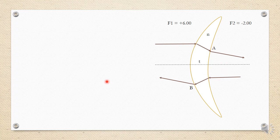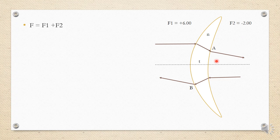We know the formula F = F1 + F2, meaning the total lens power is the sum of the front and back surface powers. However, our concern is not only the total power but also the power at the front and back vertex points. Most importantly, back vertex power matters because our eye is situated at the back, so the ray of light coming from the front surface goes through the thickness and arrives at the eye from the back surface.